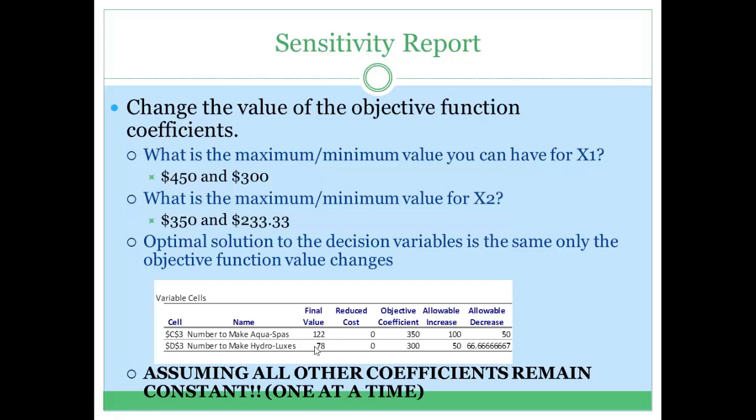Even though my optimal solution stays the same, my objective function value will change because we are changing the coefficient associated with a decision variable. In this problem, our objective function was 350 times x1 plus 300 times x2.